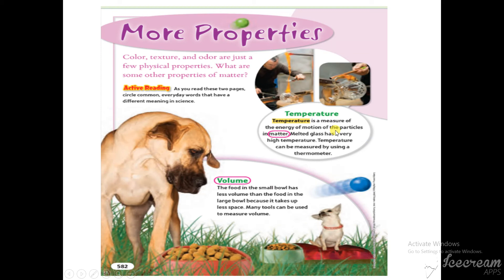You know that even solids have particles, even liquids have particles. Solid particles are very, very compact — they touch each other and they are arranged in a regular arrangement. Temperature is a measure of the energy of motion — how those particles are moving. The energy of the motion of the particles in matter is nothing but temperature. This is the scientific definition of temperature.